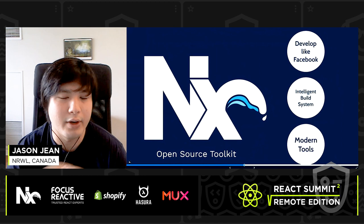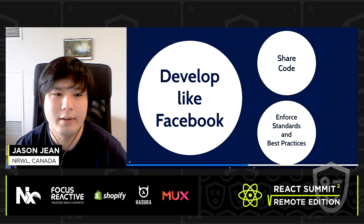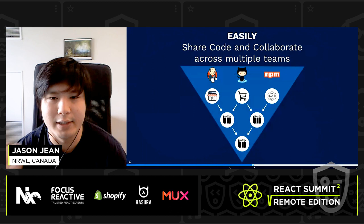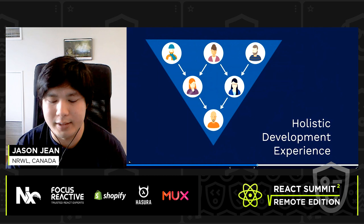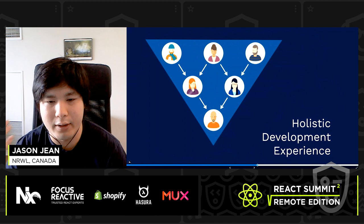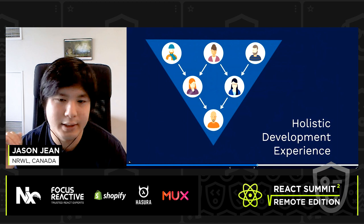For developing like Facebook: as you saw with the monorepo approach, you're able to share code very easily between different teams. This also gives you a holistic development experience — you have all these different projects under one hood, and you're able to see how different pieces work with one another. It may not be important at all times, but when you're working on a specific task involving another library, it's wonderful to see what's going on there.